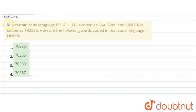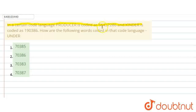The question says: In a certain code language, 'producer' is coded as 56437286 and 'kinder' is coded as 190386. How are the following words coded in that code language?